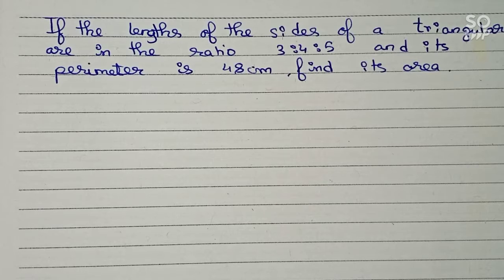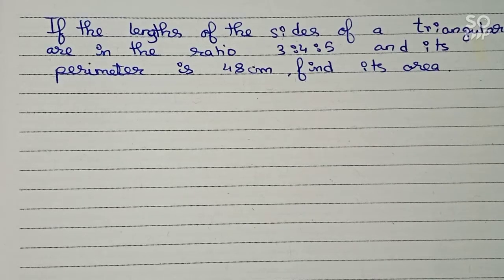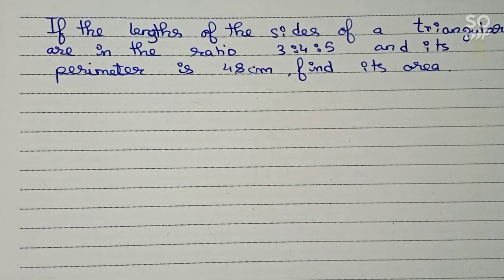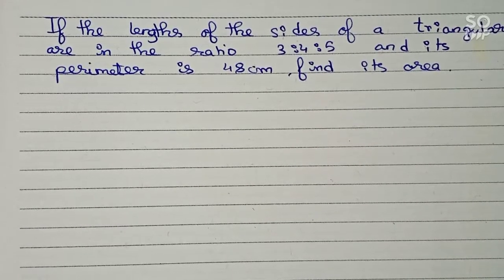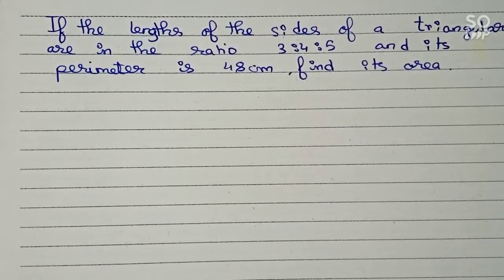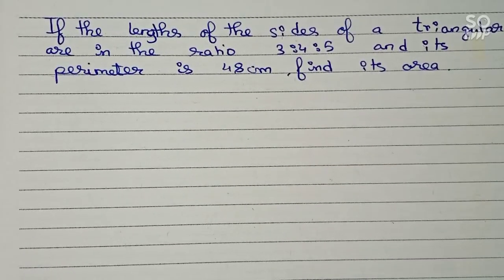Hello guys, welcome to this video. In this video, our question is: if the lengths of the sides of a triangular area are in the ratio 3:4:5 and its perimeter is 48 centimeters, find its area.